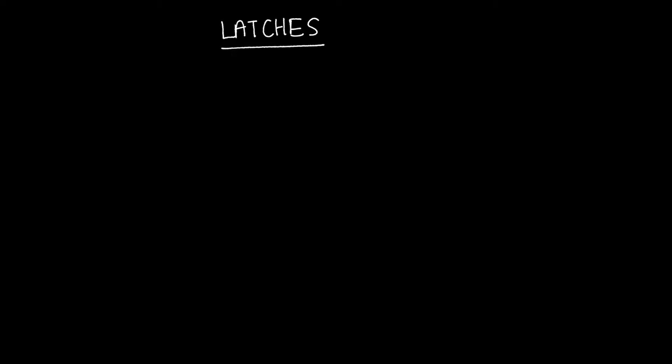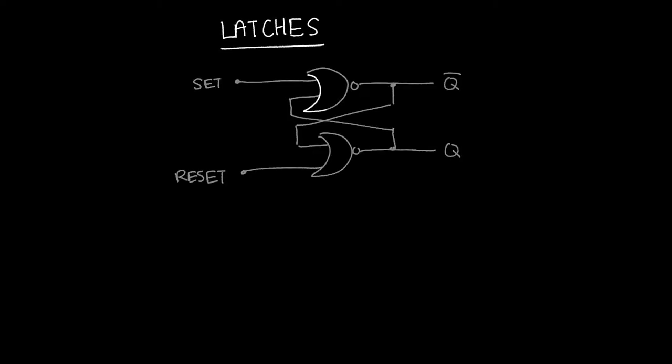In this video, I'm going to go over latches. We'll start first with the NOR latch — we'll probably never use it again, but it is instructive in how these things work. Then we're going to move on to a NAND latch. So how do these guys work? I've got two NOR gates here and I have two inputs. It's useful to think of this as a black box with just these two NOR gates inside.